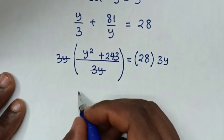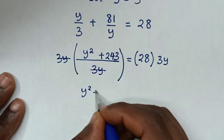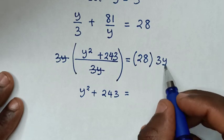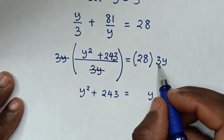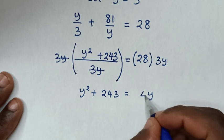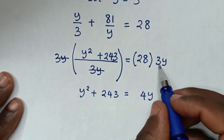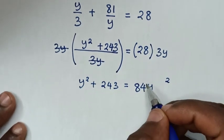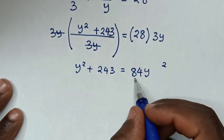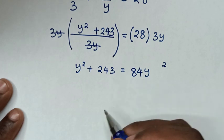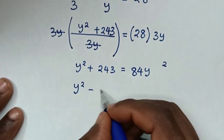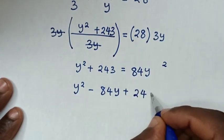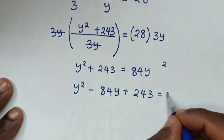After multiplying by 3y it becomes y squared plus 243 equal to 3 times 28, which is 84y. Taking 84y to the left side, it will be y squared minus 84y plus 243 is equal to 0.